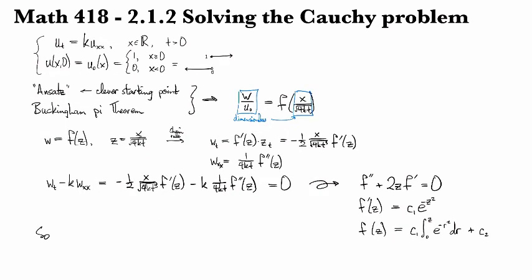And so this tells you that W, our solution for the Cauchy problem with the unit step function, is C1 integral from zero to Z, and then Z, recall, was X over square root of 4KT.